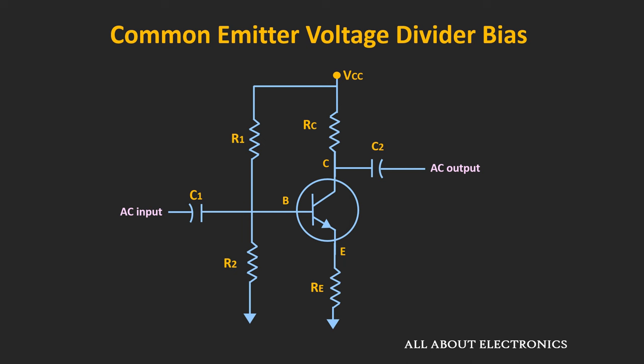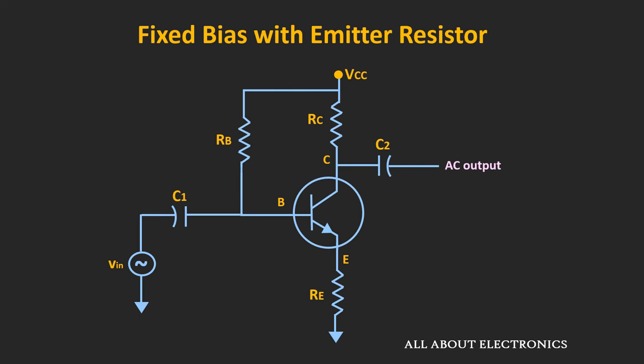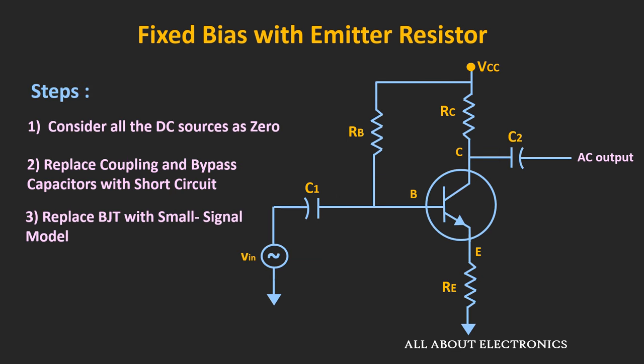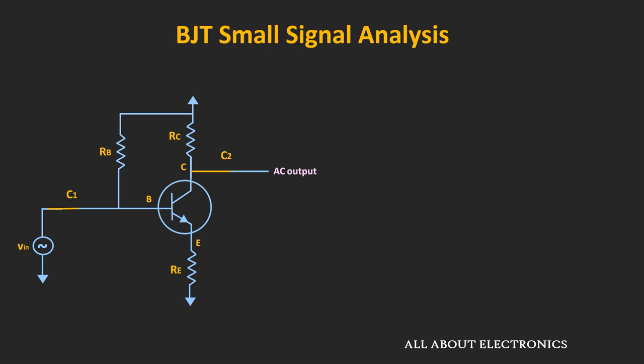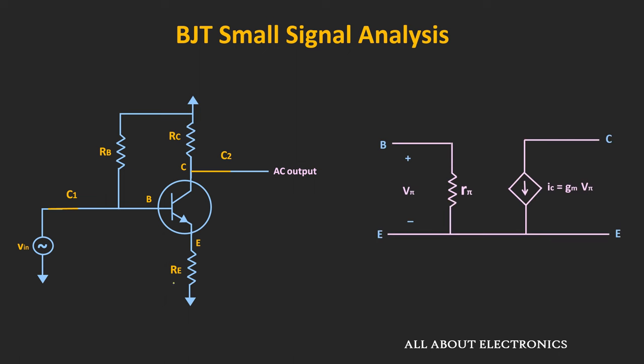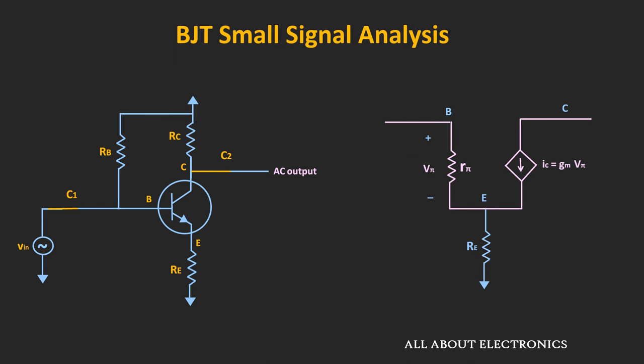First of all, let's do the small signal analysis of the fixed bias circuit which is used with the emitter resistor. For the small signal analysis, we will follow the same steps — we will consider all the DC sources in the circuit as zero, while we will replace the coupling capacitors by the short circuit, and then we will replace the BJT by the small signal model. Here, this emitter resistor is connected between the emitter and the ground terminal, so in the AC equivalent circuit it can be represented like this.